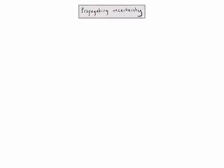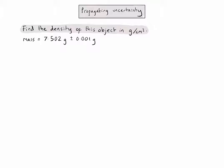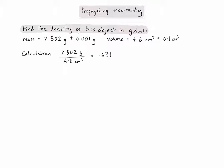In this second example, we need to find the density of an object, given the mass in grams and the volume in centimetres cubed. Taking the mass in grams and dividing by the volume in centimetres cubed, the answer on the calculator is 1.631. Because I am doing a division, I need to consider the number of significant figures carefully. The top value has four significant figures and the bottom value has only two, so my final answer must be given to two significant figures.